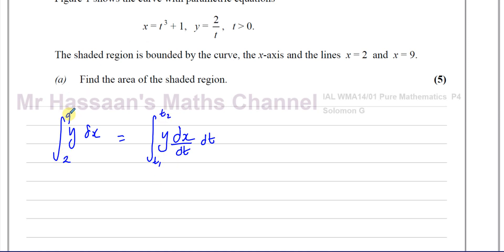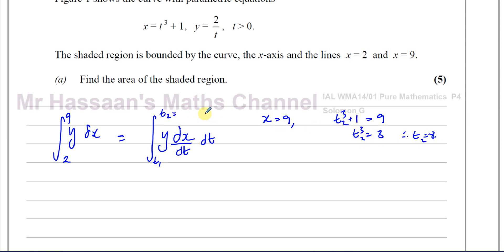The limits must be in terms of t. When x equals nine, we have t cubed plus one equals nine, so t cubed equals eight, therefore t equals two. When x equals two, we have t cubed plus one equals two, so t cubed equals one, therefore t equals one. So I know my limits: I integrate between t equals one and t equals two.